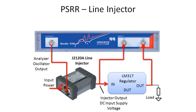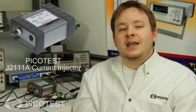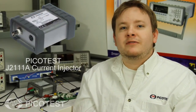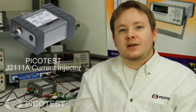Power is applied to the board via an AC to DC wall power adapter. There's roughly 7 volts at the board, 1 volt drop across the line injector, so we're applying about 6 volts to the input of the LM317, with its output set to 3.3 volts. We're also using a PicoTest J2111A for a 25 milliamp constant current load.